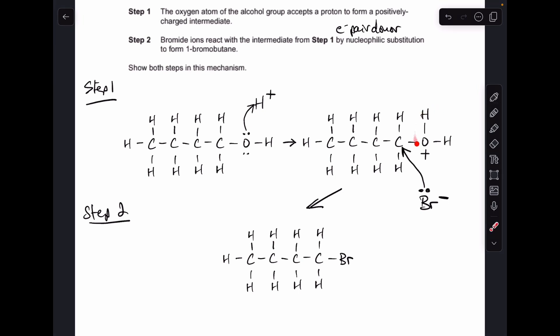And then obviously we need to lose this here. So the way that works is a pair of electrons from the CO bond are going to be moving onto the O. So that part's going to break off and form a water molecule.